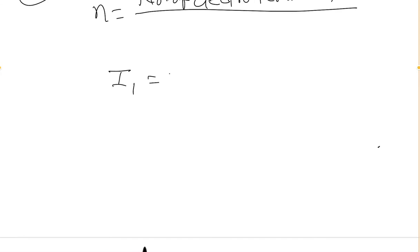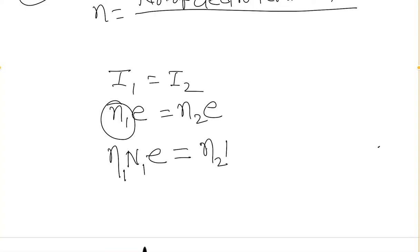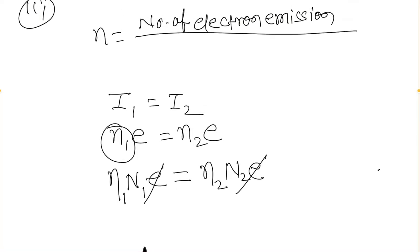The number of emitted electrons in the first case is η1·N1, carrying charge e each, and in the second case is η2·N2 carrying charge e. Here N1 is the number of incident photons per second and η is the quantum yield. So we write: η1·N1·e = η2·N2·e. The factor e cancels from both sides.